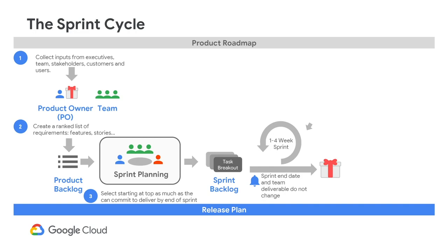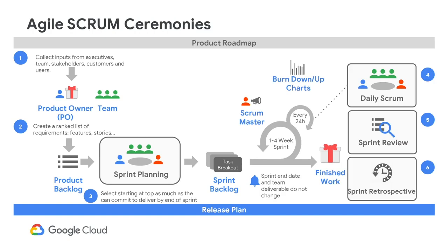At the end of the sprint, the user story should be completed and ready for go live. Anything not finished will be carried over to the next sprint or placed back to the product backlog. This sprint cycle repeats itself again. Throughout the sprint cycle, the Scrum Master is the coach and tracks the team's productivity through burn down and burn up charts to measure the team's progress in the form of velocity.